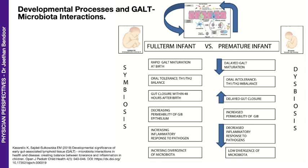You can compare this to a premature infant where dysbiosis happens — because of delayed maturation of the GALT, oral intolerance, delayed gut closure, increased permeability of the gastrointestinal barrier, and a decreased inflammatory response to pathogens with low divergence of the microbiota. It is seriously very important to have a state of symbiosis and not dysbiosis. The developmental processes of the GALT are crucial because they set the stage for health and increased divergence of the microbiota — the living organisms in the gut.